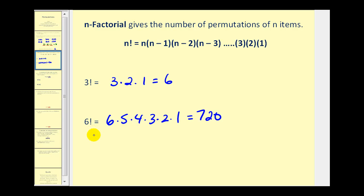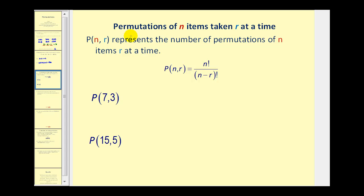Let's take a look at permutation notation. Permutations of N items taken all at a time is written using this notation, and it represents the number of permutations of N items R at a time. For example, this notation represents the permutation of seven items taken three at a time, and this one is a permutation of fifteen items taken five at a time. The formula is N factorial divided by N minus R factorial. Sometimes this is also written as N permute R, depending on what textbook you read.